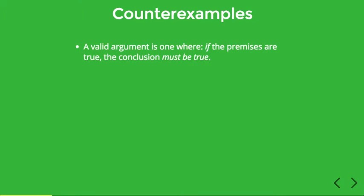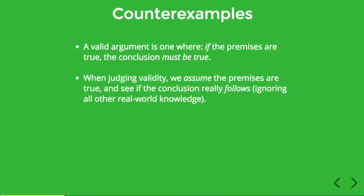Recall that a valid argument is one in which, if the premises are true, the conclusion must be true. Validity pertains to the quality of the reasoning involved in an argument and ignores the question of whether the premises are in fact true. So when judging validity we simply assume the premises are true and ask ourselves whether the conclusion really follows from those premises, while ignoring all of our real-world knowledge.